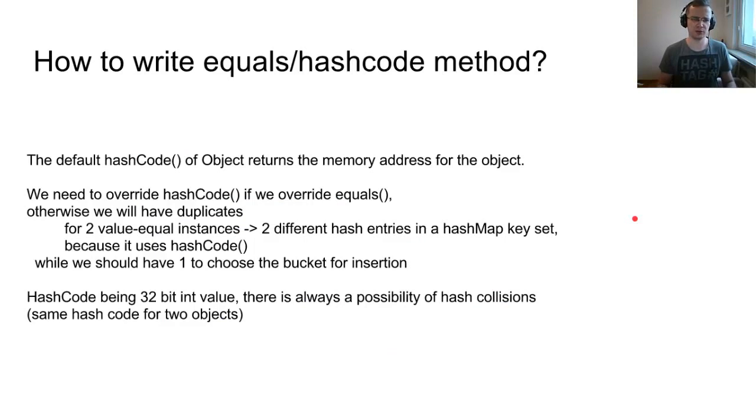The default hash code of object returns the memory address for the object. We need to override the hash code if we override equals, otherwise we'll have duplicates. So for two values which are equal, we will have two different hash entries in the hash map key set because it uses the hash code method. Hash code is the 32-bit integer value. There is always a possibility of hash collision, so that some hash codes are the same for two different objects.